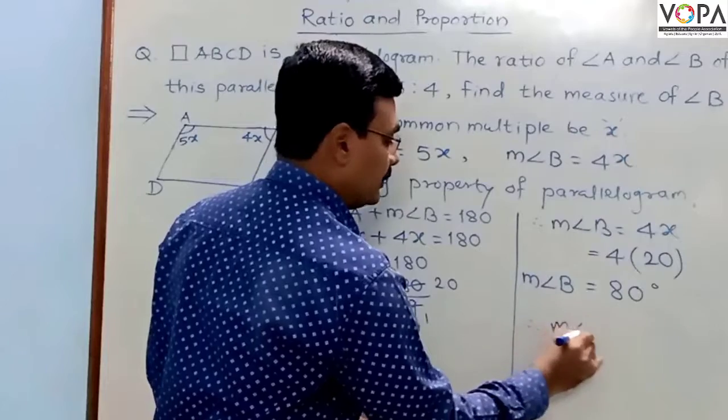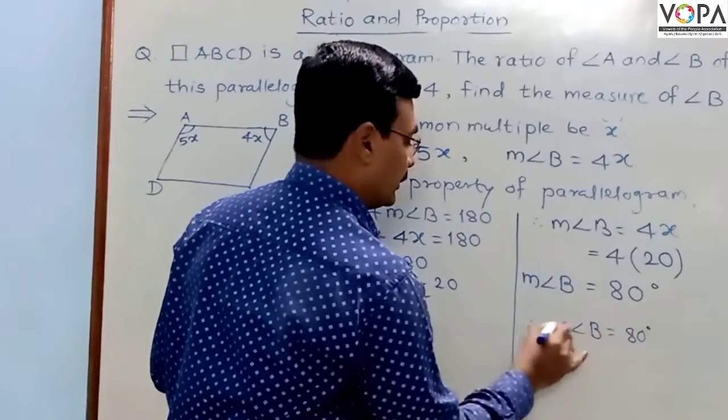We can write measure of angle B equals 80 degrees.